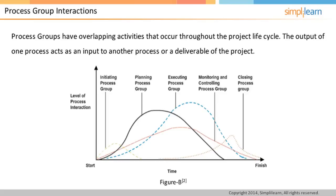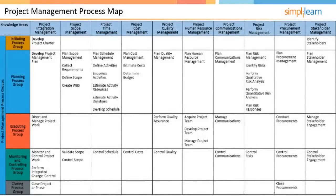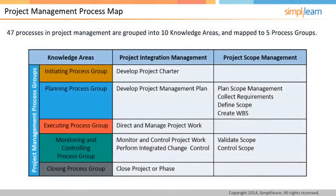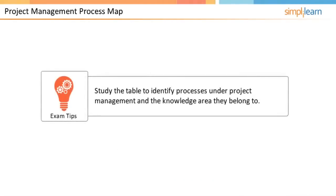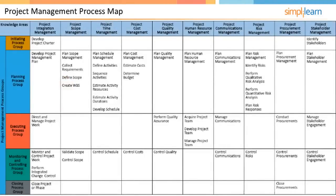The updated project management plan once again forms an input to the execution process group. Given on the screen is the list of the 47 project management processes, 10 knowledge areas, and 5 process groups. The table shows how each of them is interrelated. You can see that the project integration management processes can be mapped back to all 5 process groups, while project scope management processes are mapped back to only planning and monitoring process group.